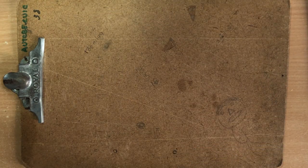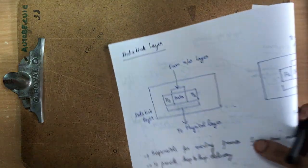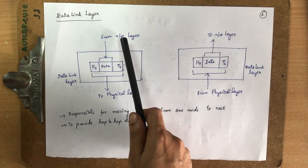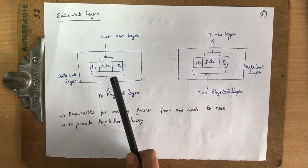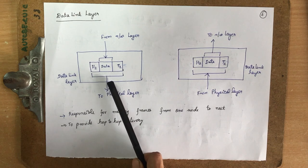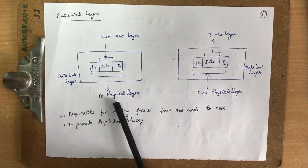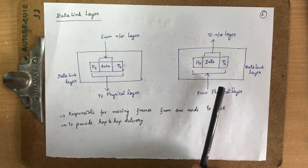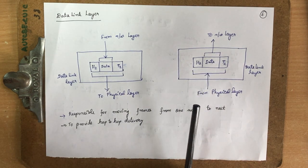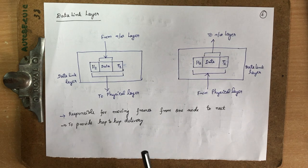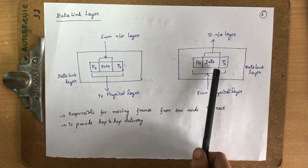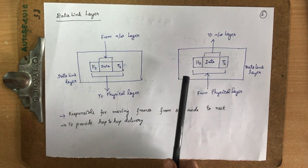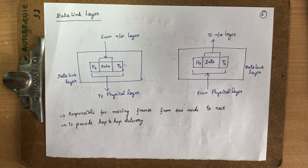The data link layer handles data in the form of frames. It converts data received from the network layer into a frame, adds a header and trailer, and sends it to the physical layer. This layer provides hop-to-hop delivery and also handles acknowledgements sent from the destination site to confirm data receipt.